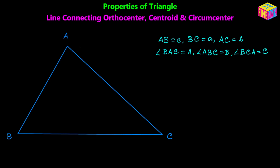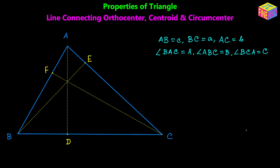First I am going to draw the perpendiculars from each of the vertices so that we get the orthocenter. AD is the first perpendicular from vertex A onto the opposite side BC, BE is the second perpendicular from vertex B onto the opposite side AC, and CF is the third perpendicular from vertex C onto the opposite side AB. Their point of intersection is the orthocenter, denoted by uppercase H.